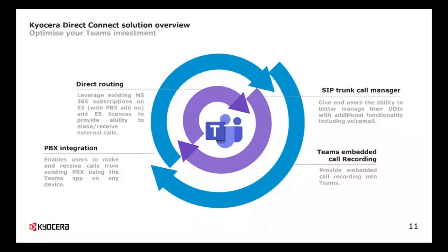Good afternoon everybody. I'm going to talk to you briefly around the items that make up our solution, where it fits within your existing infrastructure, and what that looks like as a deployment. The direct routing piece is split into two categories: the direct routing piece itself, which allows us to push DDIs direct from our carrier partner into your Teams environment via SBCs; and then the SIP trunk call manager wrapped around that, giving you manageability and more traditional PBX functionality — things like call routing, voicemail, call reporting. We also have an embedded call recording product and the ability to integrate into an existing PBX infrastructure.